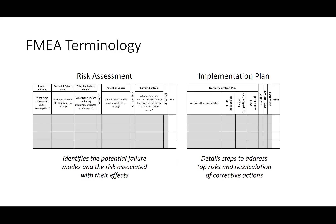In the FMEA itself, there are two main components. The first is the risk assessment, and the second is the implementation plan. The risk assessment identifies the potential failure modes and the risk associated with their effects. The implementation plan is where you detail steps to address the top risks and then recalculate after corrective actions have been put in place.